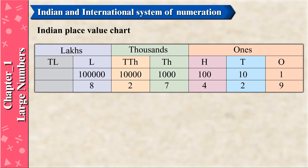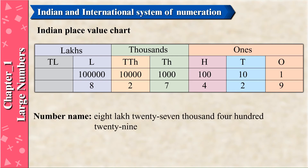Indian place value chart: Lacs period — TL (Ten Lakhs) = 1,00,000, value 8; Thousands period — TTH (Ten Thousands) = 10,000, value 2; TH (Thousands) = 1,000, value 7; Ones period — H (Hundreds) = 100, value 4; T (Tens) = 10, value 2; O (Ones) = 1, value 9. The number name for 8,00,27,429 is written using these place values.